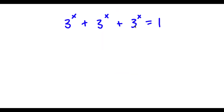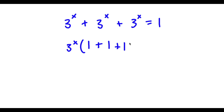3 to the power of x plus 3 to the power of x plus 3 to the power of x is equal to 1. Now, what I'm going to do is I'm going to first start by factoring out 3 to the power of x from my left-hand side. So now I have 3 to the power of x times — 3 to the power of x divided by 3 to the power of x is 1 — so I have 3 to the power of x times 1 plus 1 plus 1, and this is equal to 1. Now, if I simplify what's in the parentheses, which is 3, I get 3 to the power of x times 3 is equal to 1.